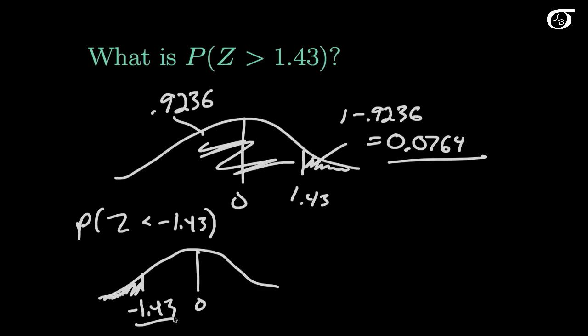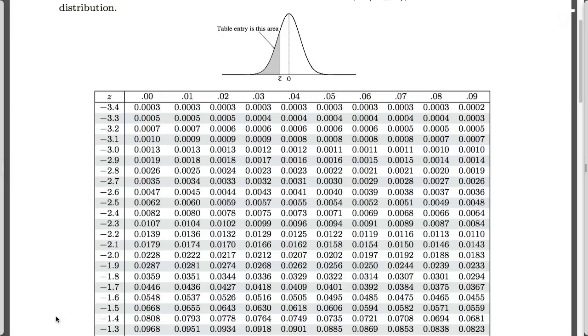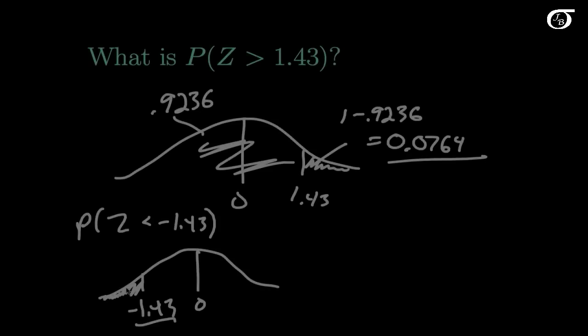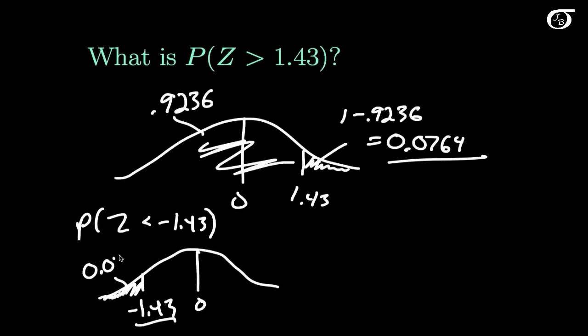We can just go to our table and find that. So we go to the page of our table that has the negative values of Z. We find the negative 1.4 here, we find the 0.3 here, and they meet up at 0.0764. So that's our answer. This is 0.0764.